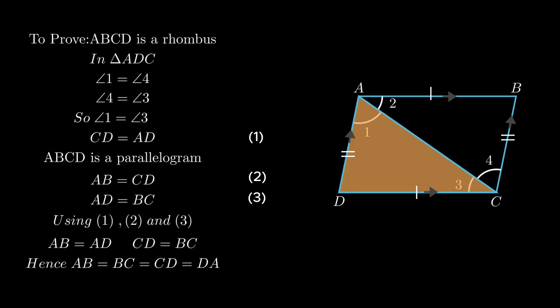Since all the sides of quadrilateral ABCD are equal, hence ABCD is a rhombus.